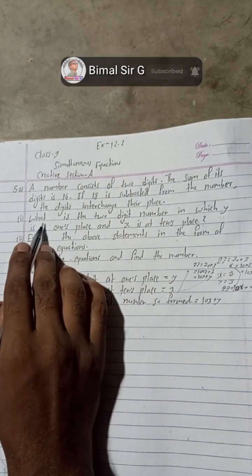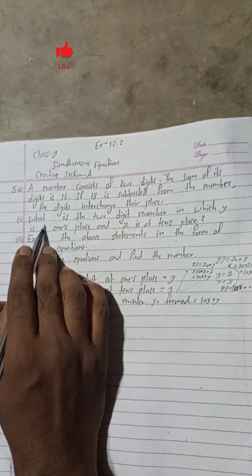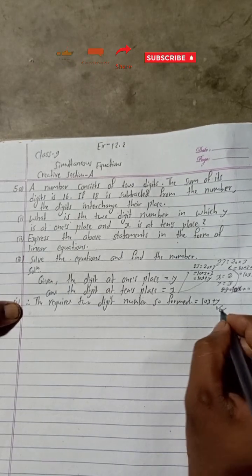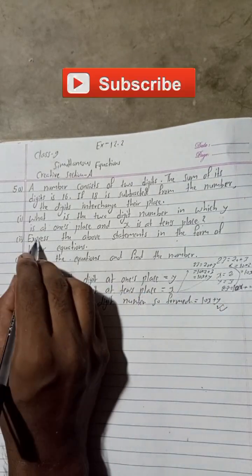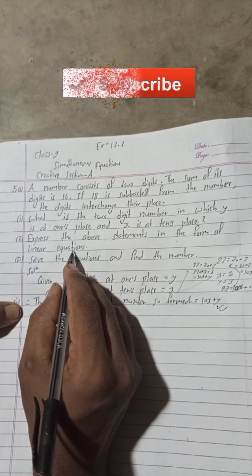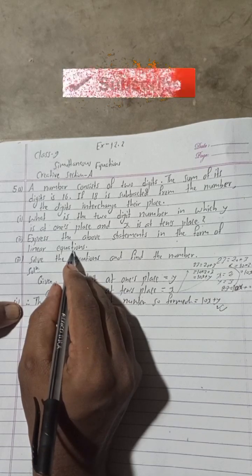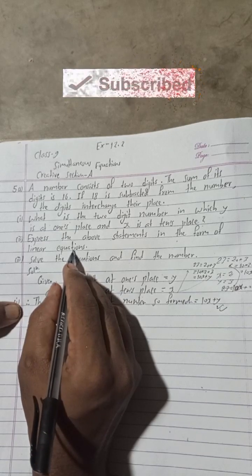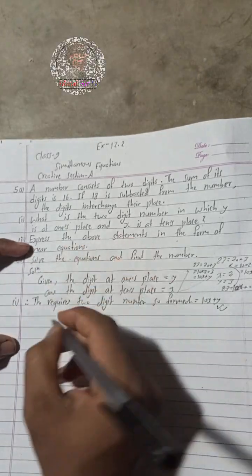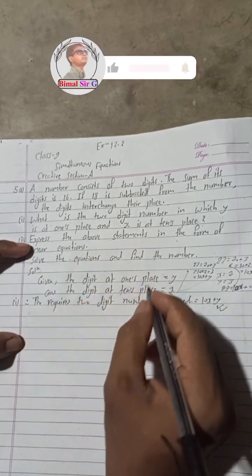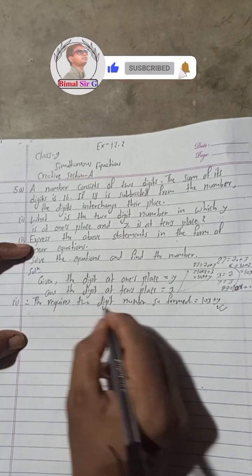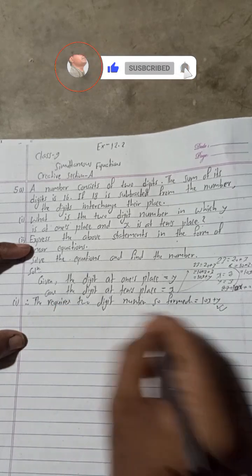So we got the answer for question one. The required two-digit number so formed is 10x plus y. Now for question 2, express the above statements in the form of linear equations.